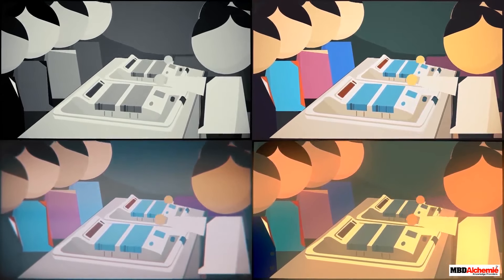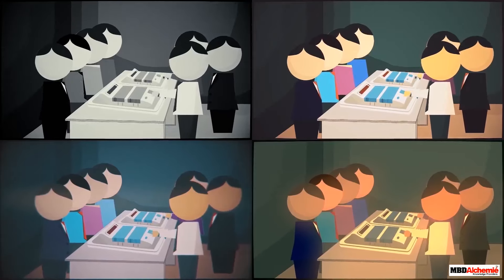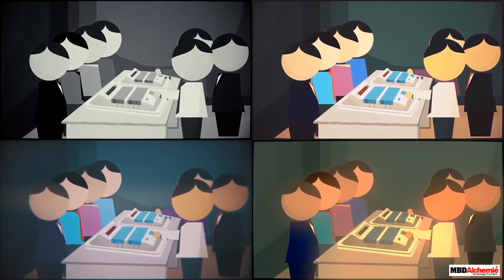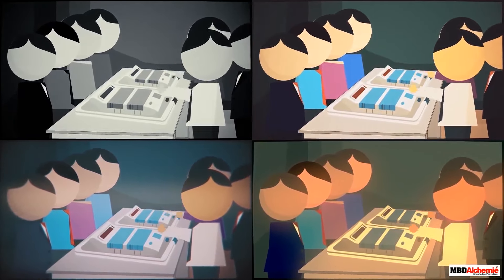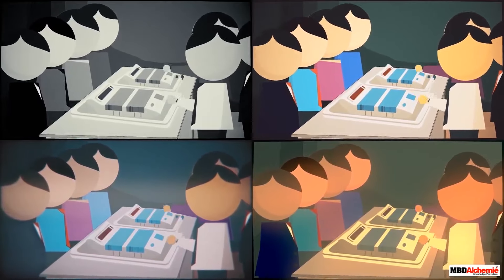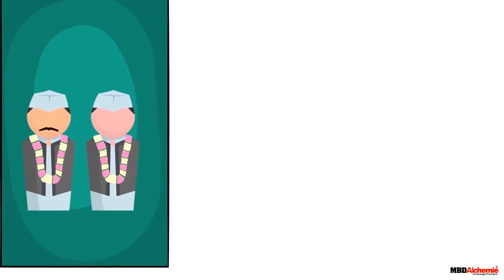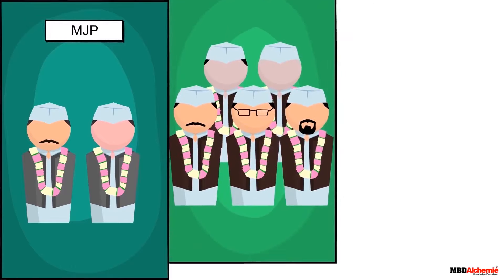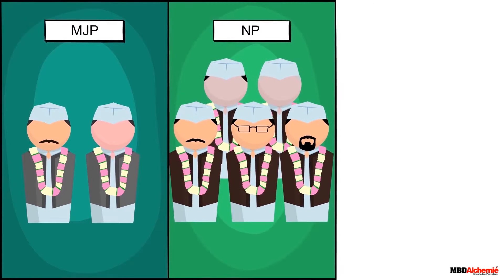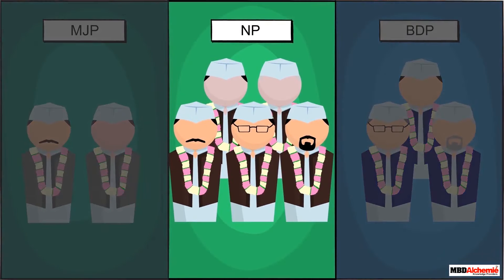The candidates getting the maximum number of votes in each constituency are declared winners. In a general election, the counting of votes in all constituencies usually takes place at the same time on the same day. After it becomes clear who the winning candidates are, the political party with the maximum number of winning candidates forms the government.